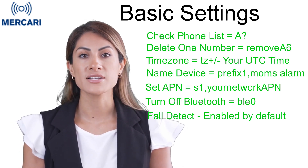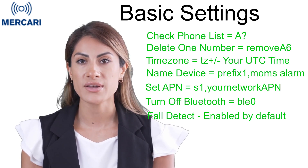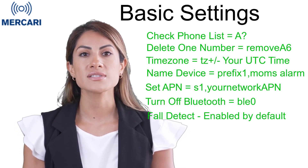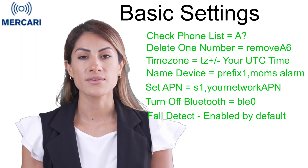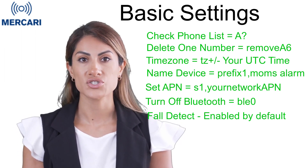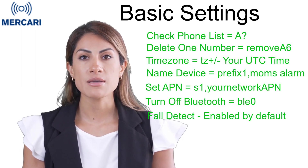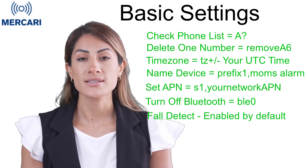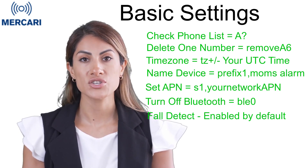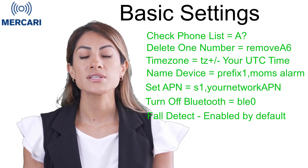Unless you have purchased a Bluetooth charging base or beacons, which are sold separately, you can turn off the device's Bluetooth as this will save battery. Send the code BLE0 and it will disable the Bluetooth transmissions. The automatic fall detection function is enabled by default and set to a medium sensitivity setting, so you may not need to make any changes until you have tested it for your unique circumstances.